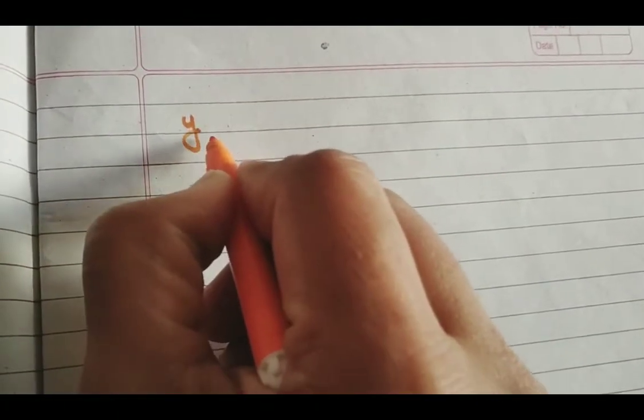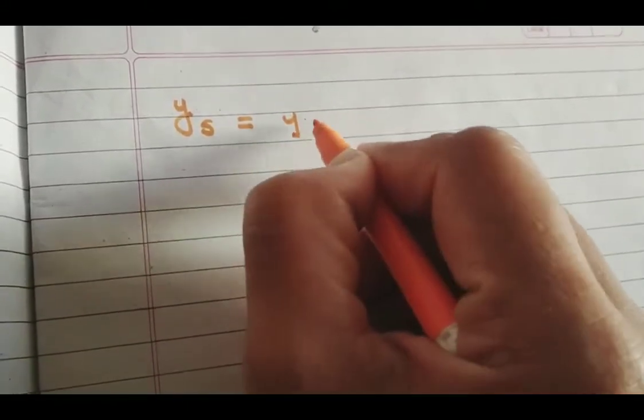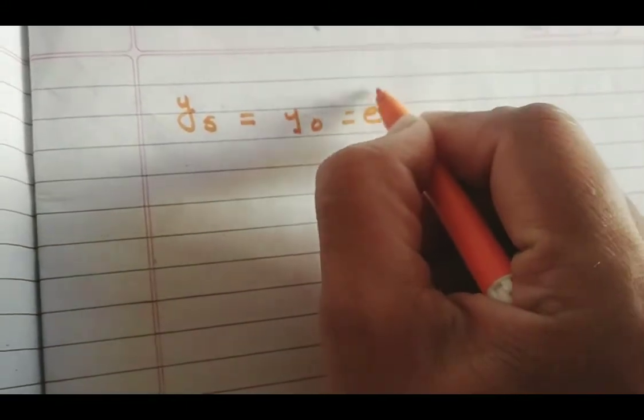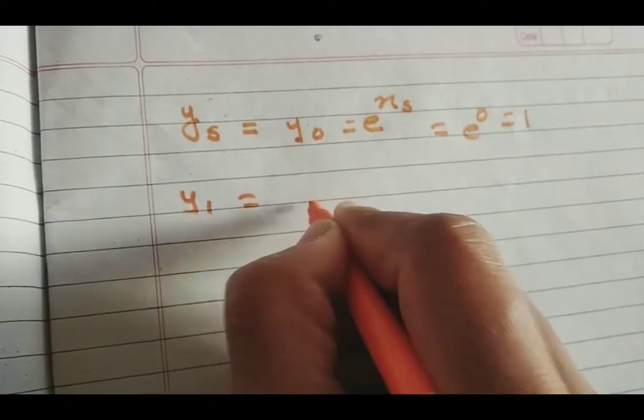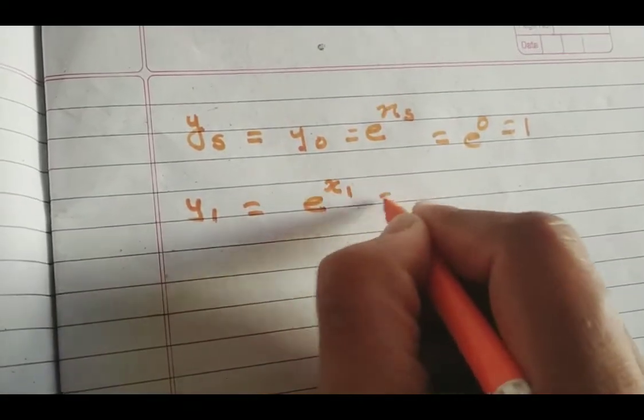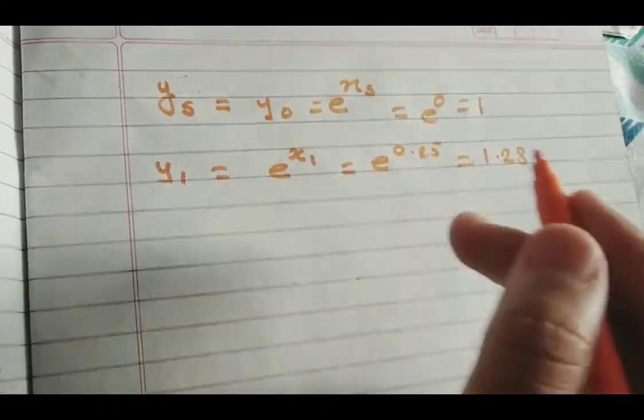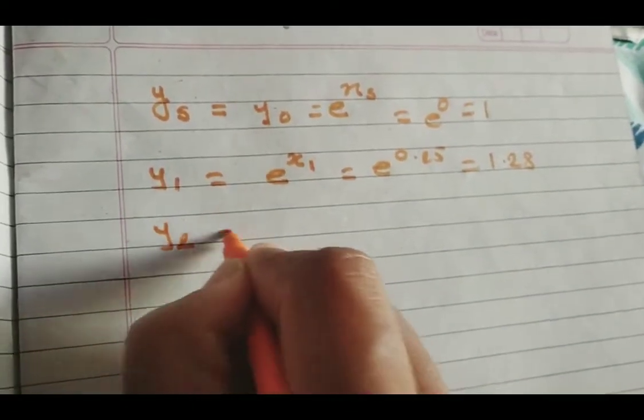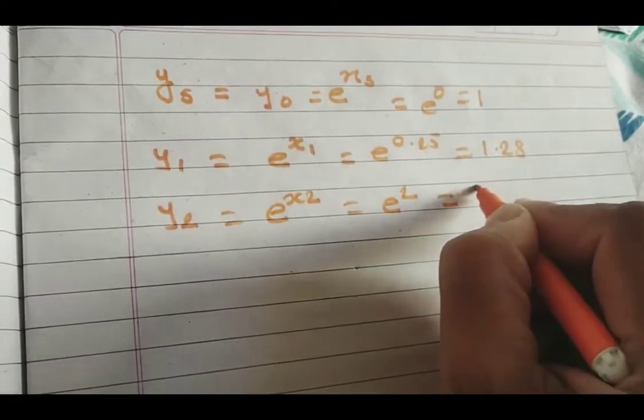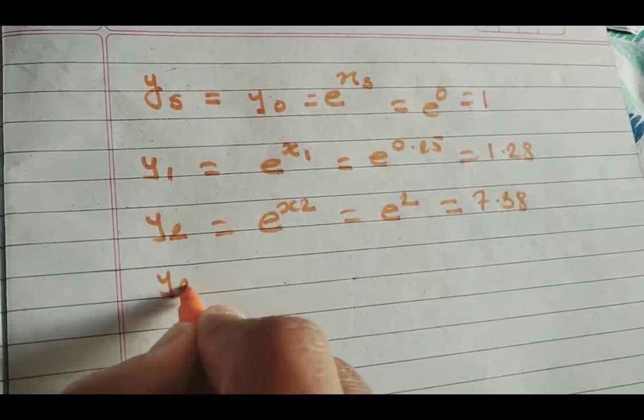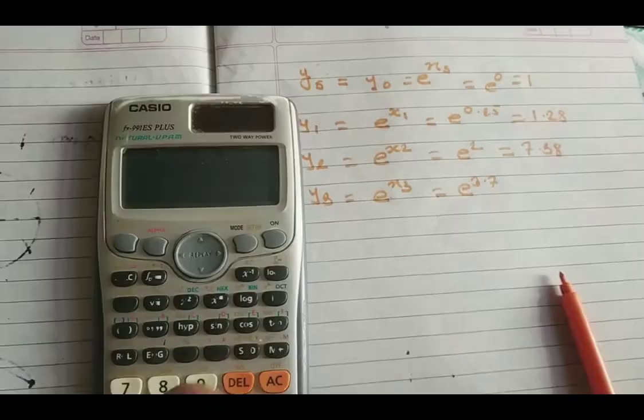Now let's calculate Y values. Y is a function of X, so Ys = e^0 = 1, Y1 = e^0.25 = 1.28, and Y2 = e^2 = 7.38. You can use the calculator to compute e^x values.